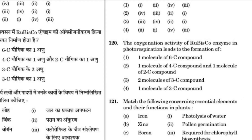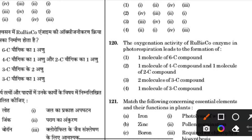The oxygenation activity of RuBisCO enzyme leads to photorespiration and results in the formation of one molecule of a 3-carbon compound. The answer is 4.